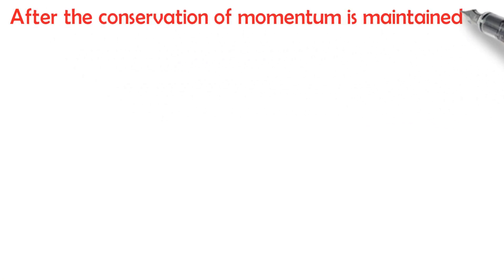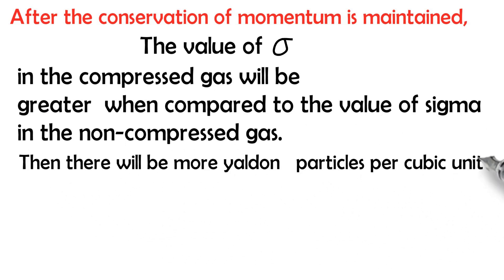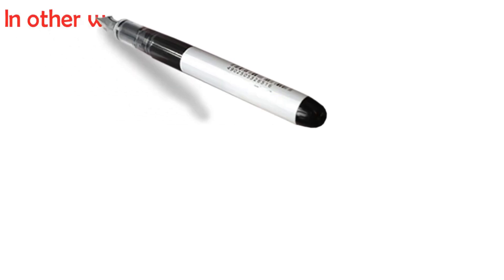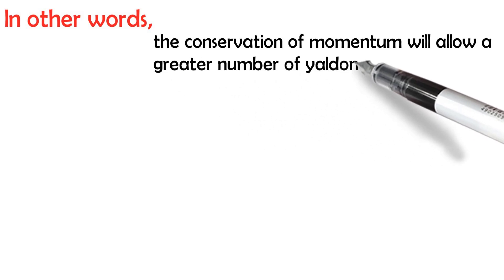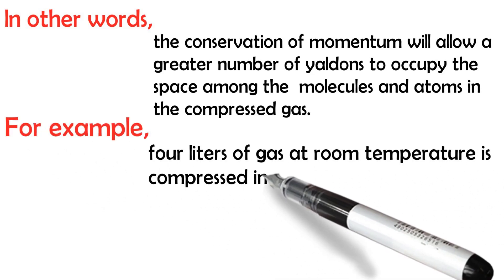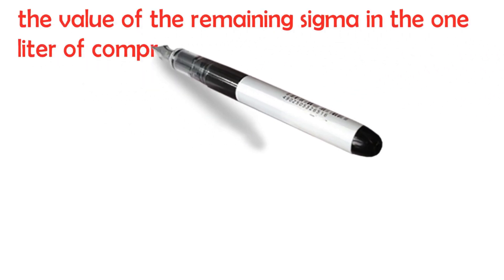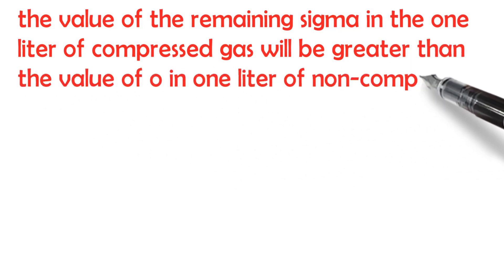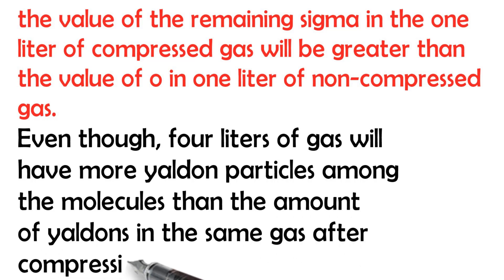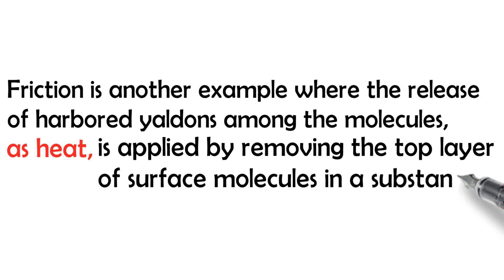After the conservation of momentum is maintained, the value of sigma in the compressed gas will be greater compared to non-compressed gas. There will be more Yaldon particles per cubic unit among the molecules of the compressed gas, since those molecules will be moving with a slower average speed. For example, 4 liters of gas at room temperature compressed into 1 liter: after returning to room temperature, the sigma in the 1 liter of compressed gas will be greater than sigma in 1 liter of non-compressed gas. Friction is another example where harbored Yaldons among molecules are released as heat by removing the top layer of surface molecules in a substance.